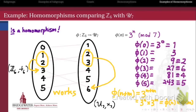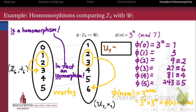In fact, because this function is one-to-one and onto, it is an isomorphism from Z6 to U7. So Z6 and U7 are isomorphic as groups, written U7 ≅ Z6. When we write it that way, we're saying there is an isomorphism from one group to the other.